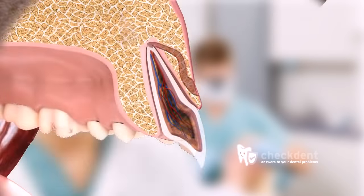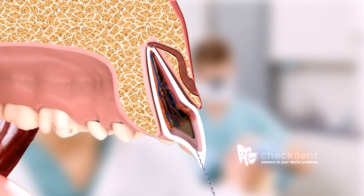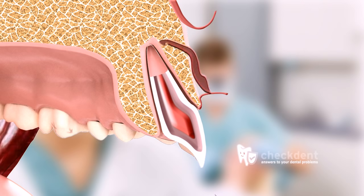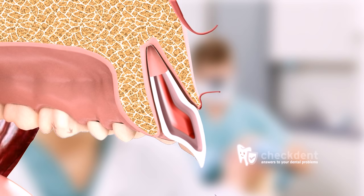Possible treatment options include either a root canal treatment, or, if the focus is too large, root canal treatment with subsequent root tip resection. The fistula canal is usually removed during the surgery. If not, it normally heals by itself after the causative factor is removed.